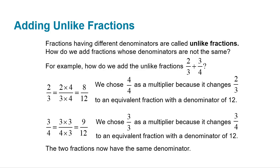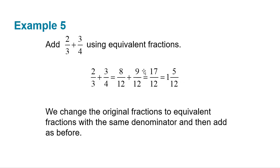So you do 2/3 times 4/4, which changes into 8/12. You do 3/4 times 3/3, which becomes 9/12. We can now add those together: 8 and 9 is 17, we get 17/12. Then we reduce, changing it to a mixed number. We do 17 divided by 12, which goes in once with a remainder of 5. There's our answer of 1 and 5/12.